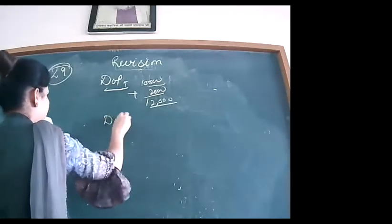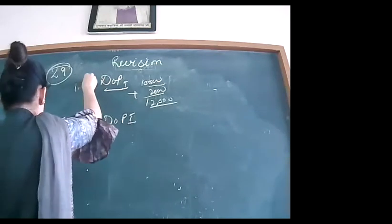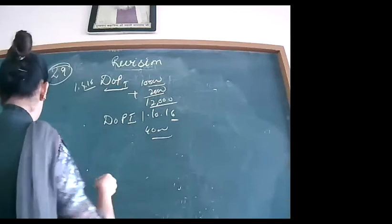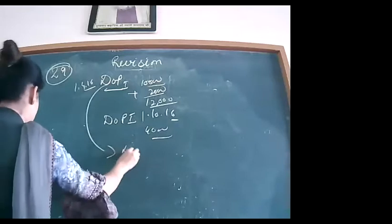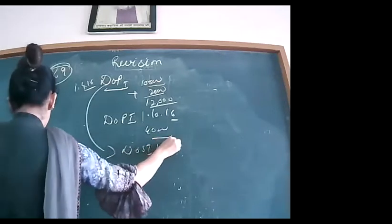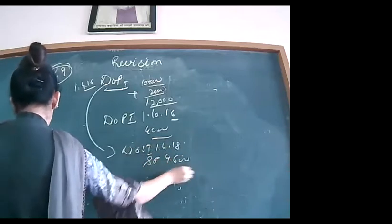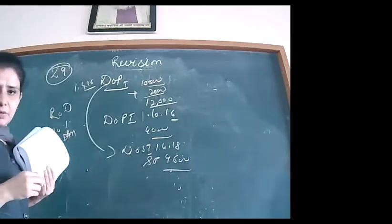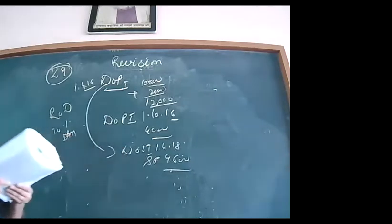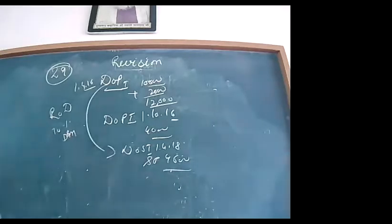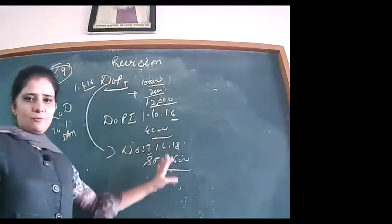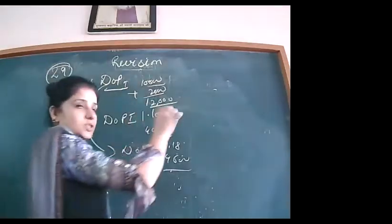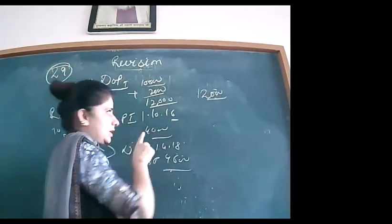Prepare the machinery account up to 31st March 2019 for years 2016–17, 2017–18, and 2018–19. Before preparing the ledger, calculate the book value of Machine 1 being sold. Cost = ₹12,000, rate 10% WDV. Year 1 (2016–17): depreciation = 10% × ₹12,000 = ₹1,200; value = ₹10,800. In WDV, each year depreciation is charged on the reduced balance, not the original cost.